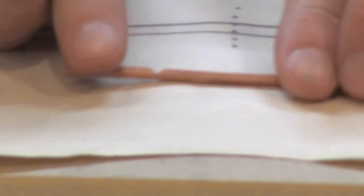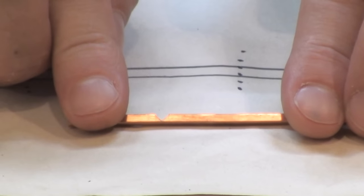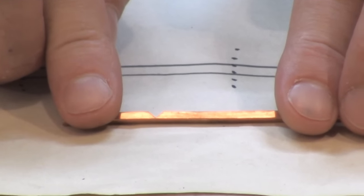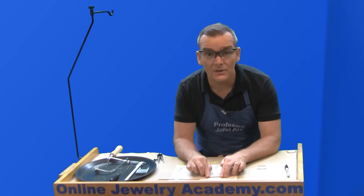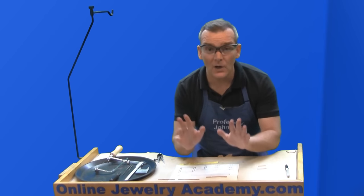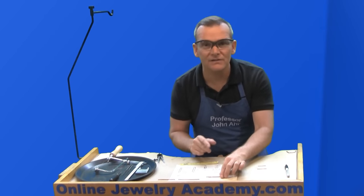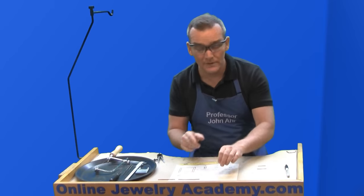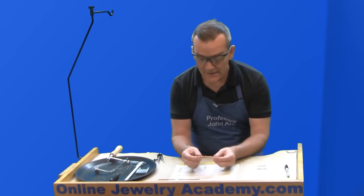So I now have this notched very deeply and I'm ready to make the bend. Now, some of you are going to go, oh my god, I filed all the way through it. Don't panic. You can still solder them together. It's just important that you get the angle correct.